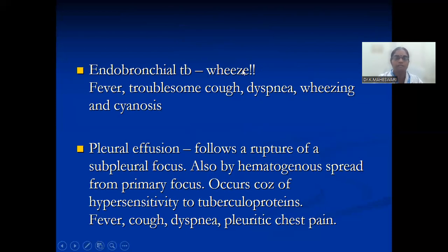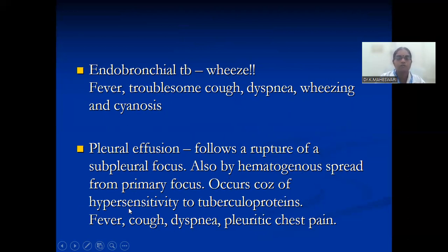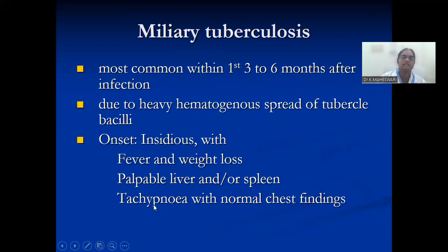Endobronchial tuberculosis can also occur with fever, troublesome cough, dyspnea, wheezing, and sinuses. Pleural effusion follows rupture of a subpleural focus, or by hematogenous spread from the primary focus. It occurs because of hypersensitivity to tuberculin protein, not necessarily because of infection per se.